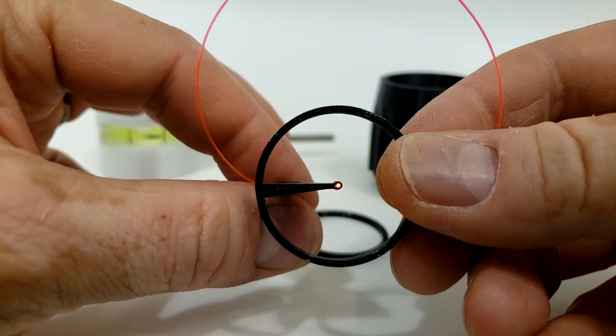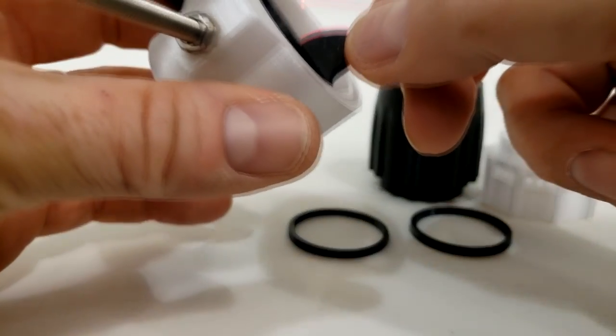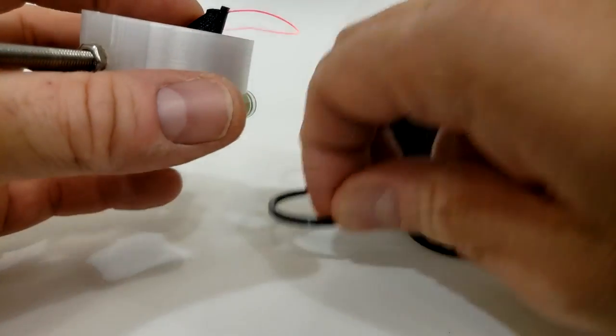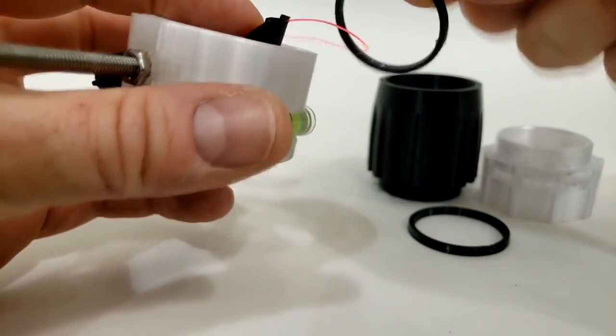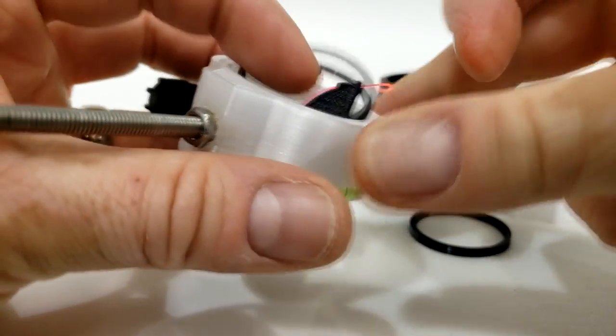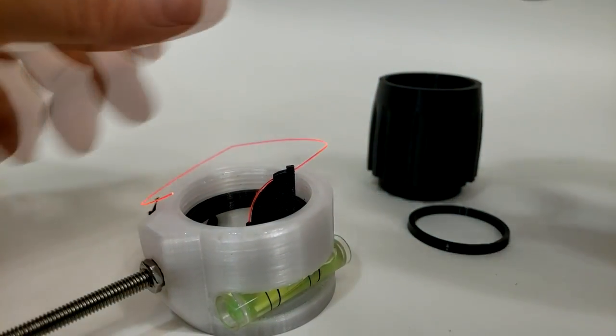Pull that all the way in. You can see how bright that fiber is already looking. Now place this in your scope housing. You'll need to put your o-ring around it. You've got to thread your fiber through there. So that's what we've got so far.